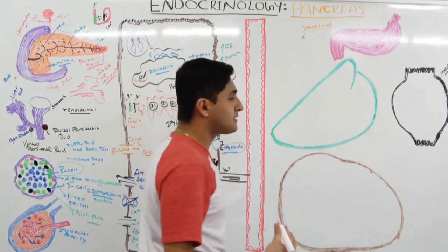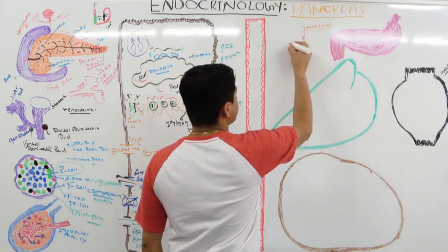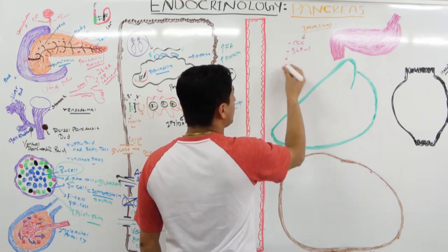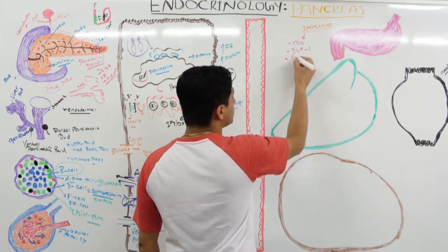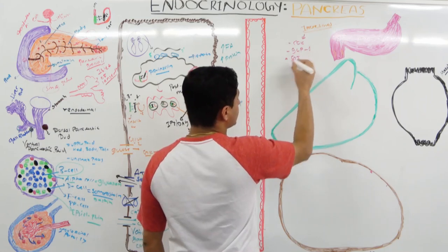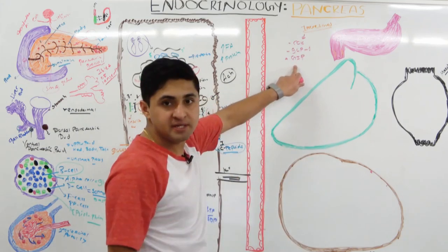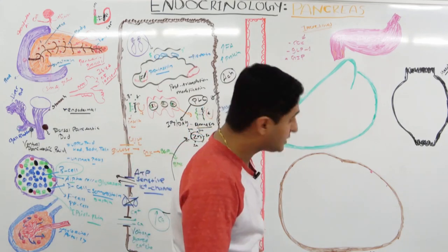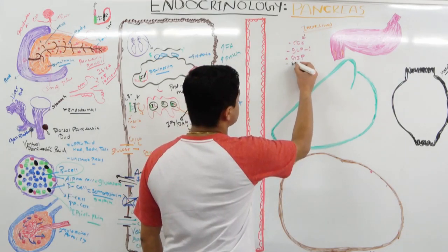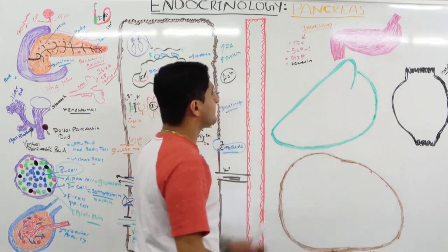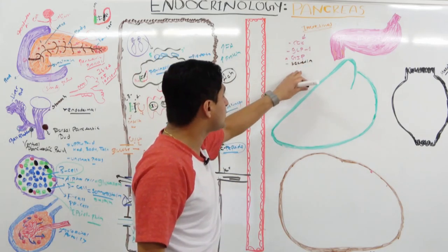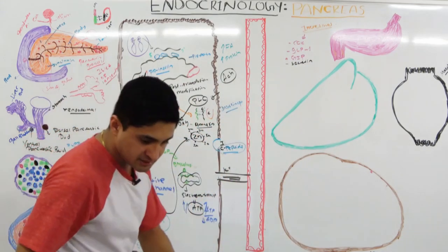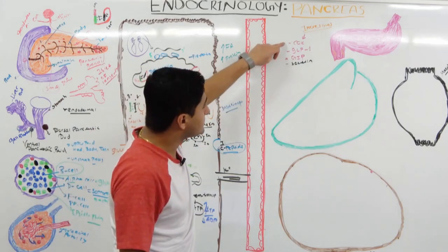The incretins include CCK, glucagon-like peptide 1, glucose-dependent insulinotropic peptide (GIP) — also called gastric inhibitory peptide — and secretin. CCK activates phospholipase C on beta cells, raising IP3 and DAG and ultimately increasing intracellular calcium, promoting insulin secretion. GLP-1 acts through 7-transmembrane receptors coupled to the Gs pathway, activating adenylyl cyclase and raising cyclic AMP.